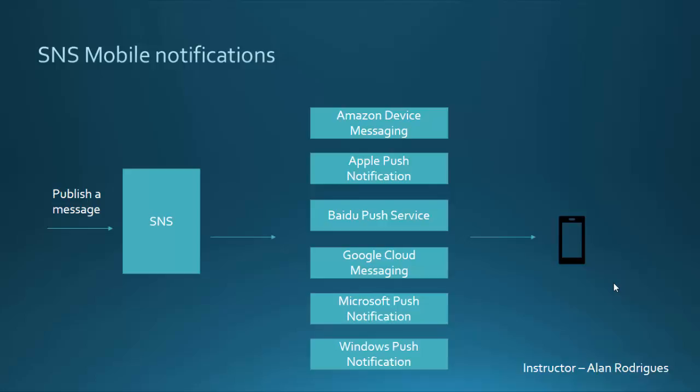By default, AWS has support for these mobile providers: Amazon Device Messaging, Apple Push Notification, the Baidu Push Service, Google Cloud Messaging (also known as Firebase), Microsoft Push Notification, and Windows Push Notification.